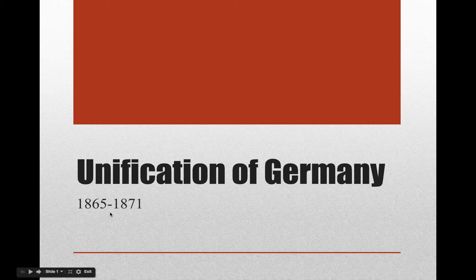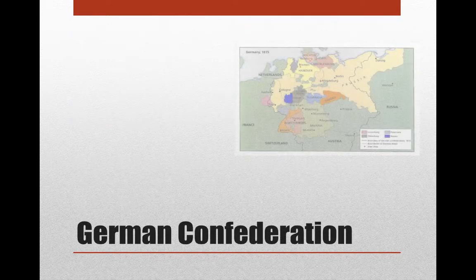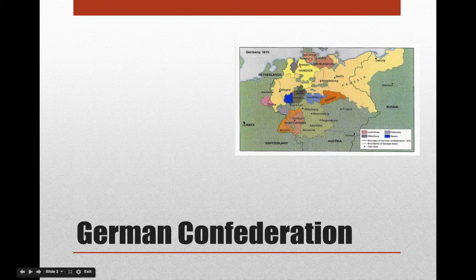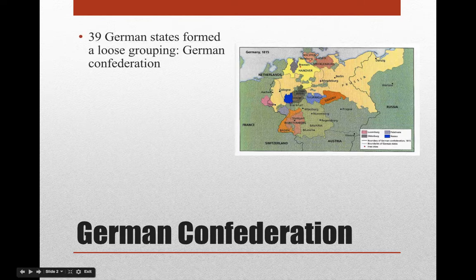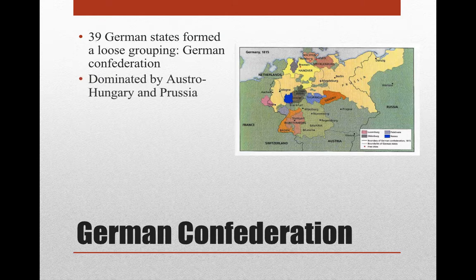We're talking about the period 1865 to 1871, but of course the story starts much before then. After the fall of Napoleon, what will become Germany was a mess of small German-speaking states called the German Confederation — 39 different states, kind of loosely grouped together. The two biggest are going to be Austria, or what will become Austria-Hungary, and Prussia.